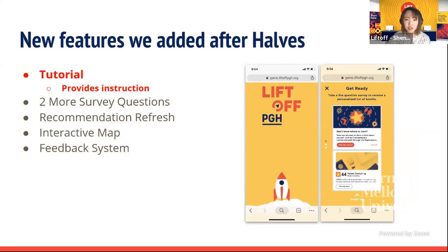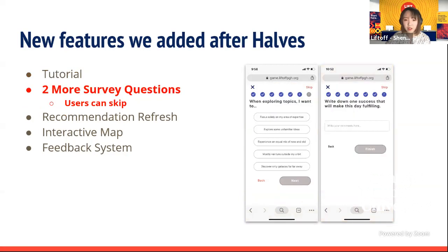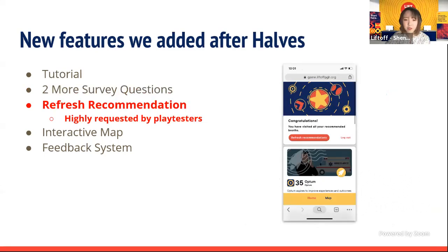Users need to take a survey to get recommendations. We added two more survey questions that users can either take or skip — all survey questions are provided by our client. At halves we recommended three booths to users and they were not dynamic. We now recommend five booths and allow users to refresh recommendations after five booth visits.